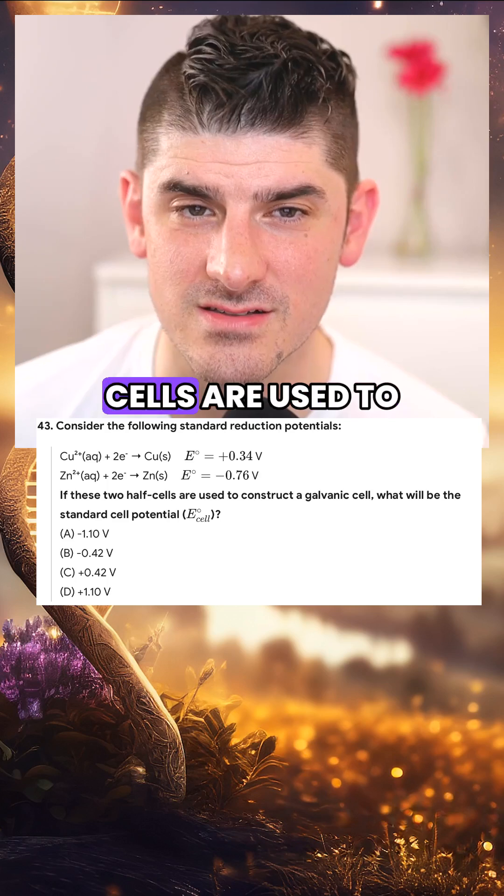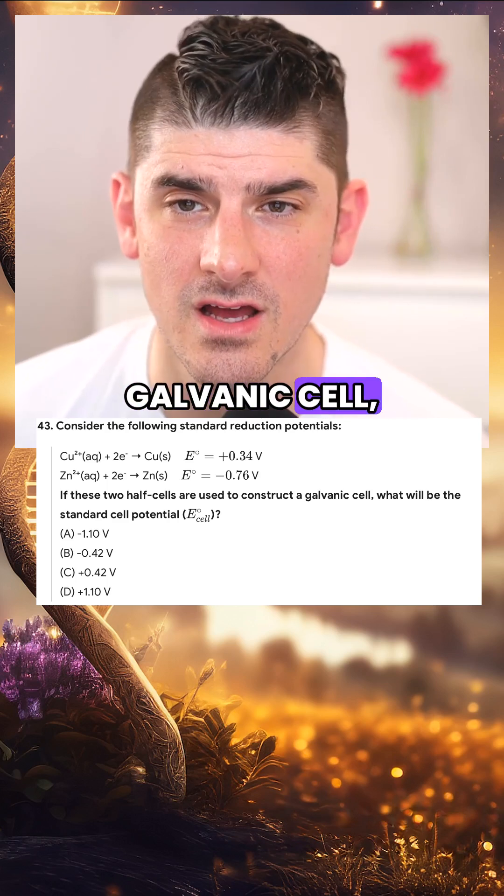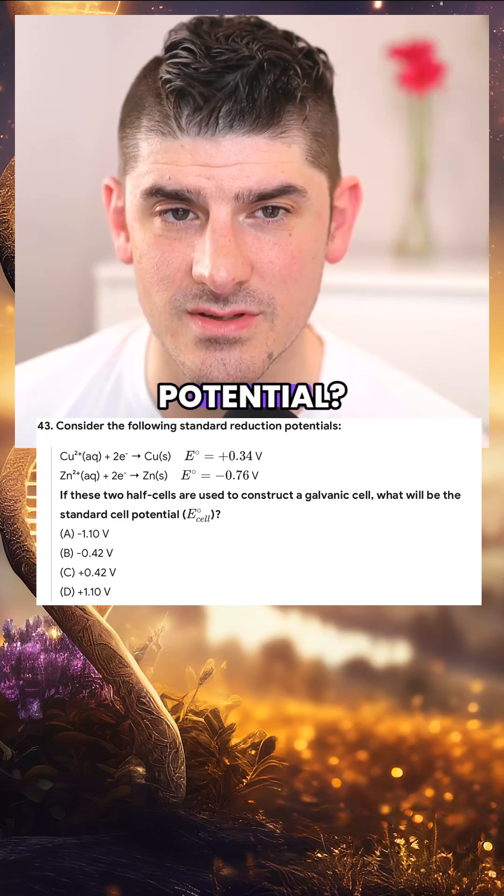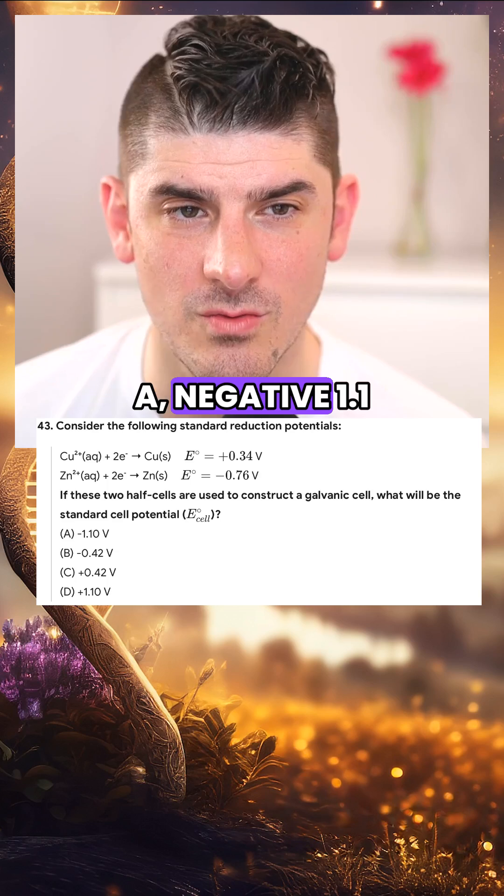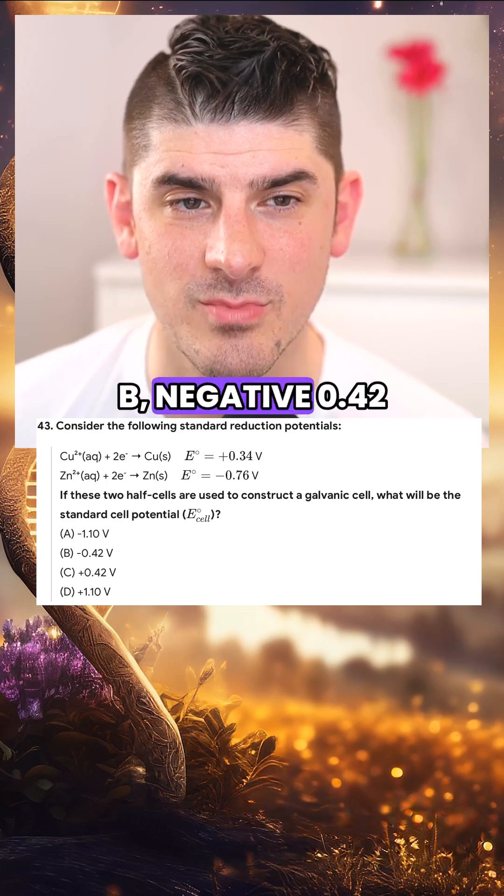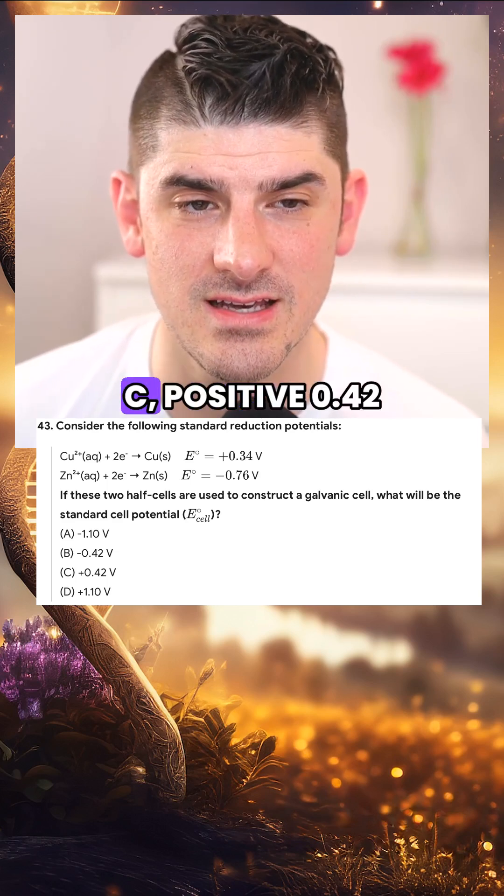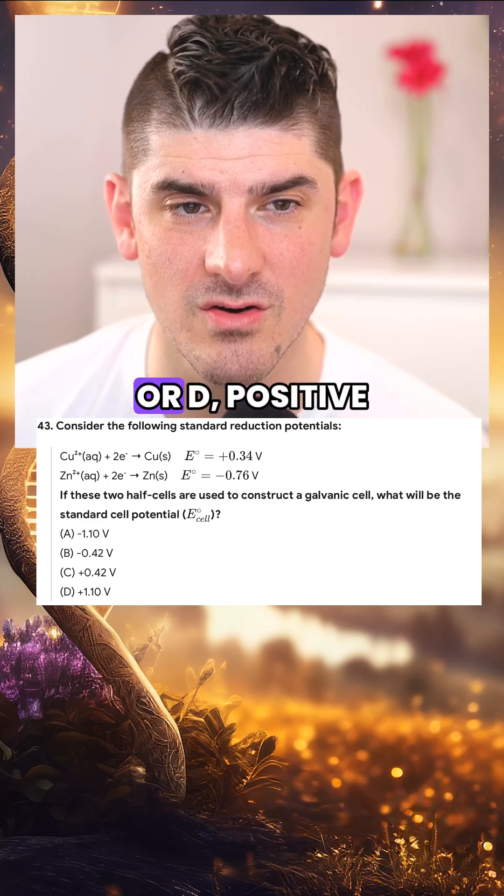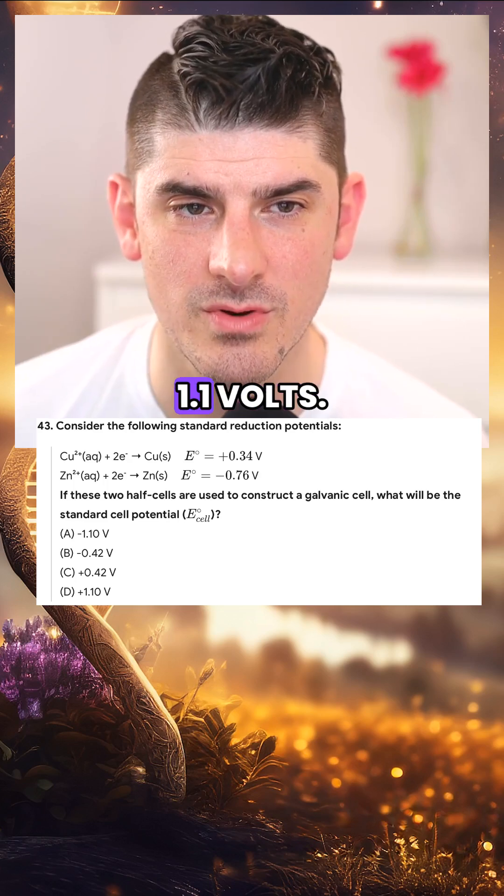If these two half cells are used to construct a galvanic cell, what will be the standard cell potential? A, negative 1.1 volts. B, negative 0.42 volts. C, positive 0.42 volts. Or D, positive 1.1 volts.